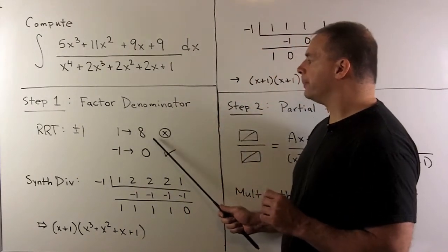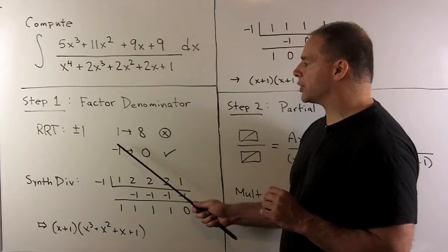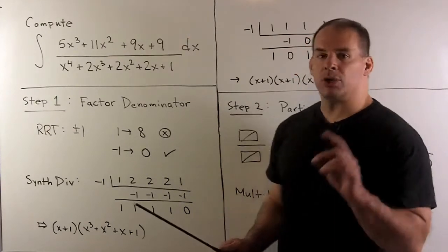If I put a 1 in, I get an 8, so 1's not a root. If I put a minus 1 in, I get a 0. So we found one root.